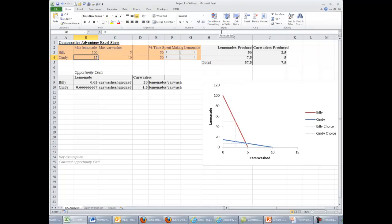While Cindy could produce, say, 200 lemonades or three car washes. Now you may have noticed as I was typing things in, a few things are changing. One is the amount of lemonade produced and car washes produced changed as a result of me changing these numbers. Another is the opportunity cost, which are automatically calculated here, also changed.